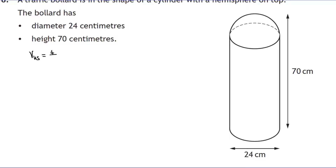The formula for a full sphere is (4/3)πr³. For a hemisphere we divide by two. The radius is 12, so it's (4/3) × π × 12³ ÷ 2. Typing that in: 4 ÷ 3 × π × 12³ ÷ 2 gives 3619.115 cm³.